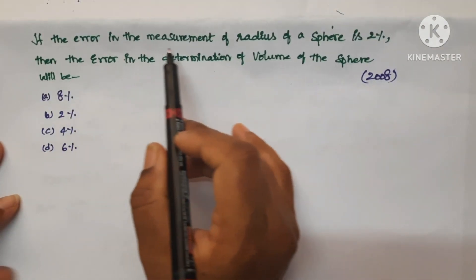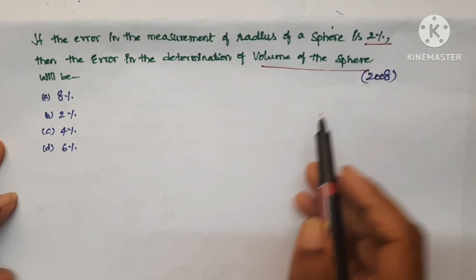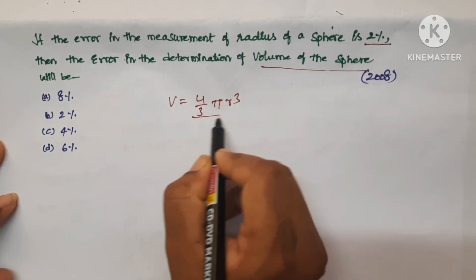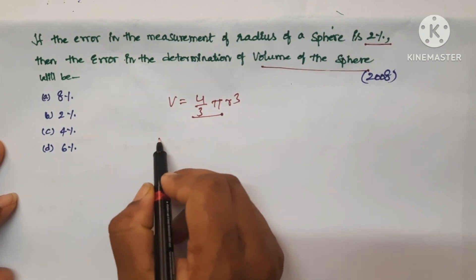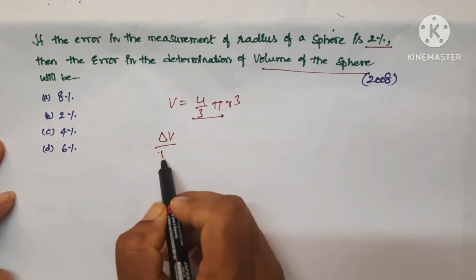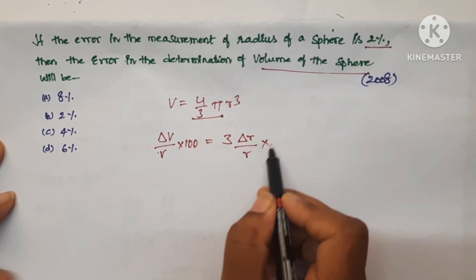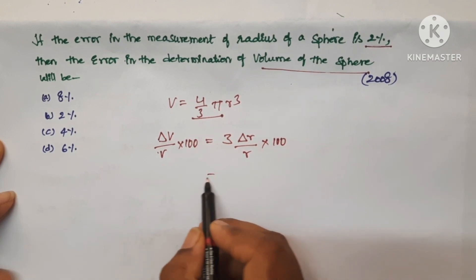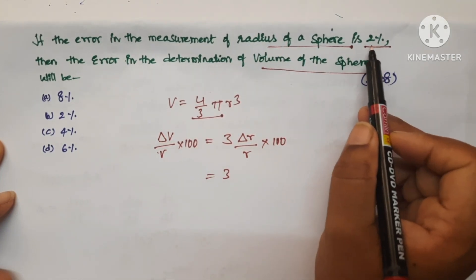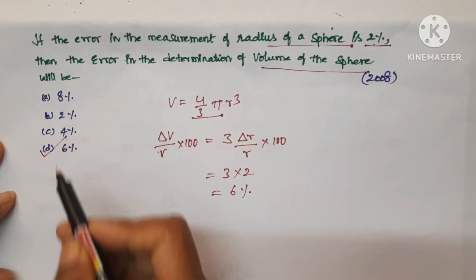Next question: If the error in the measurement of radius of a sphere is 2%, then the error in the determination of volume of the sphere. The formula for volume of a sphere is (4/3)πR³. Here (4/3) and π are constants, so (ΔV/V) × 100 = 3 × (ΔR/R) × 100 = 3 × 2 = 6%. Option D is the correct answer.